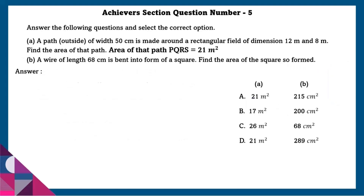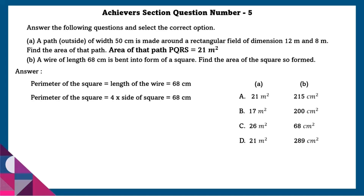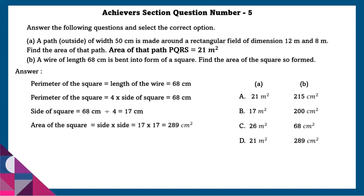Part B: A wire of length 68 centimeters is bent to form a square. Find the area of the square. Perimeter of the square equals length of wire equals 68 centimeters. Perimeter equals 4 times the side length equals 68 centimeters. Using this, the side of the square is 17 centimeters. The area of the square is 289 square centimeters.